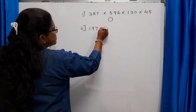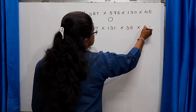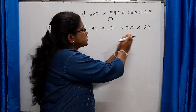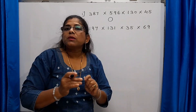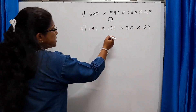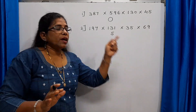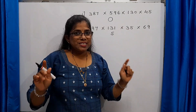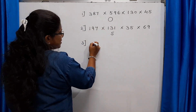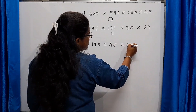Next tip: consider 197 × 131 × 35 × 69. Here, if all the units digits are odd numbers, and among those odd digits one of them is 5, then the units place of the final product is going to be 5. All units places must be odd, and if one among them is 5, the units place is 5.